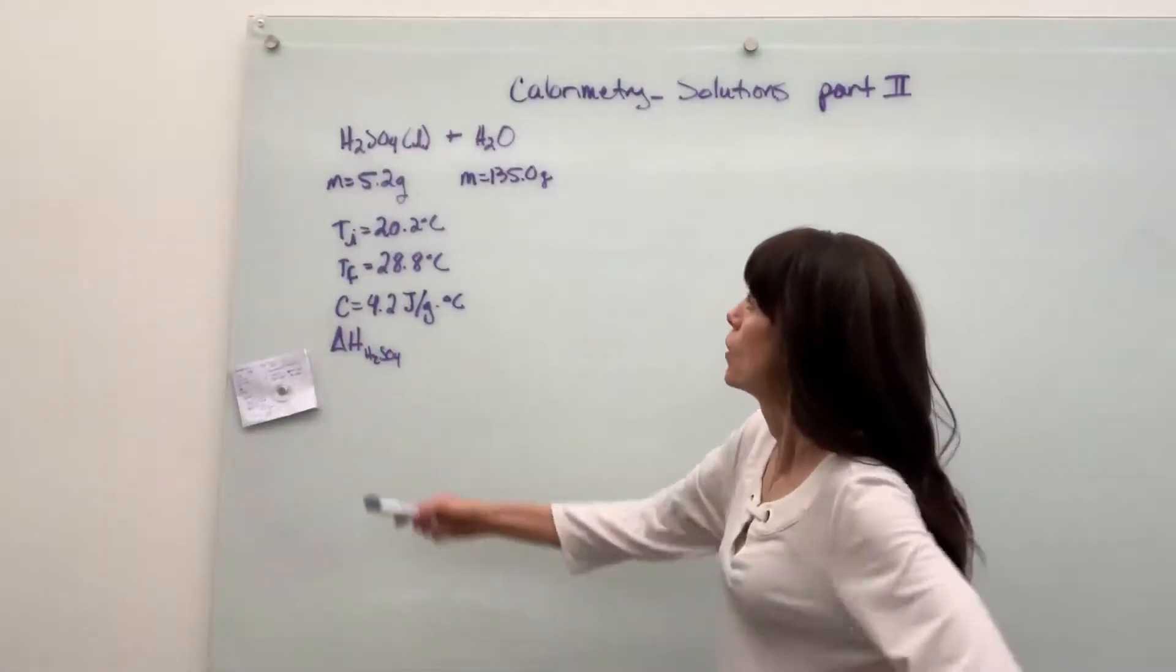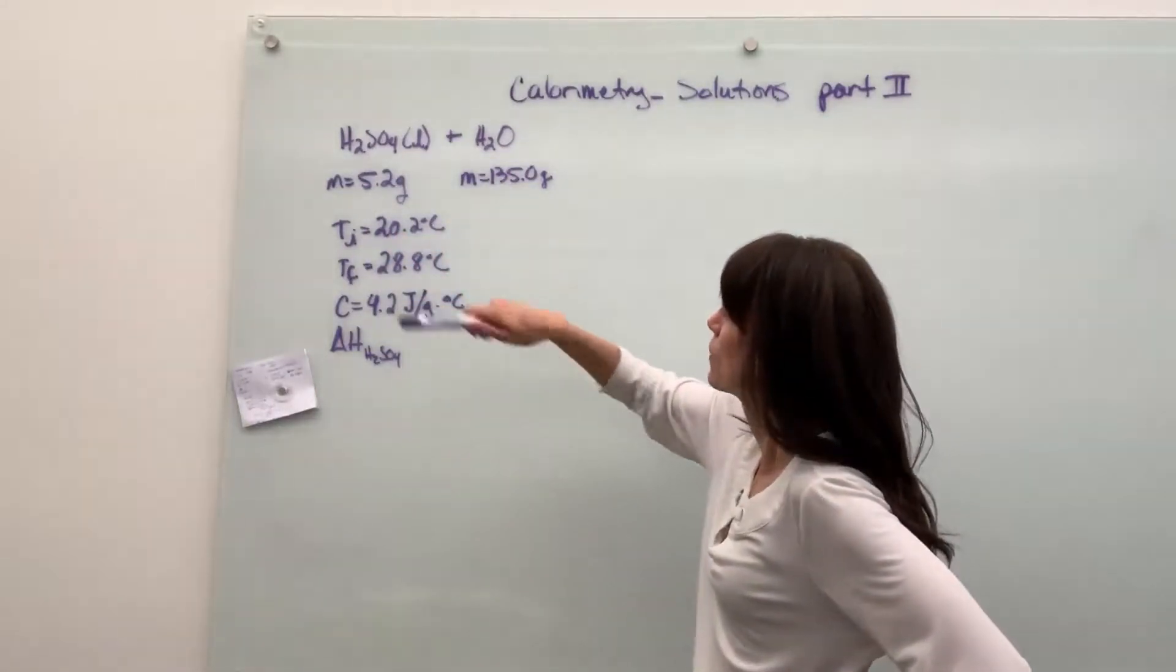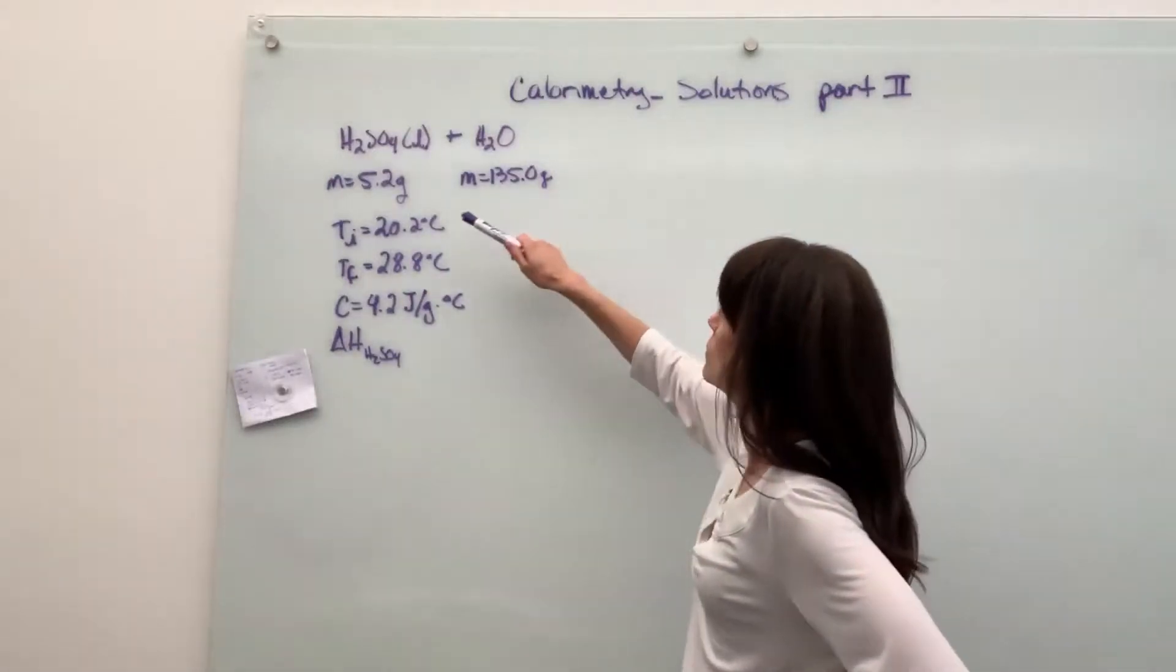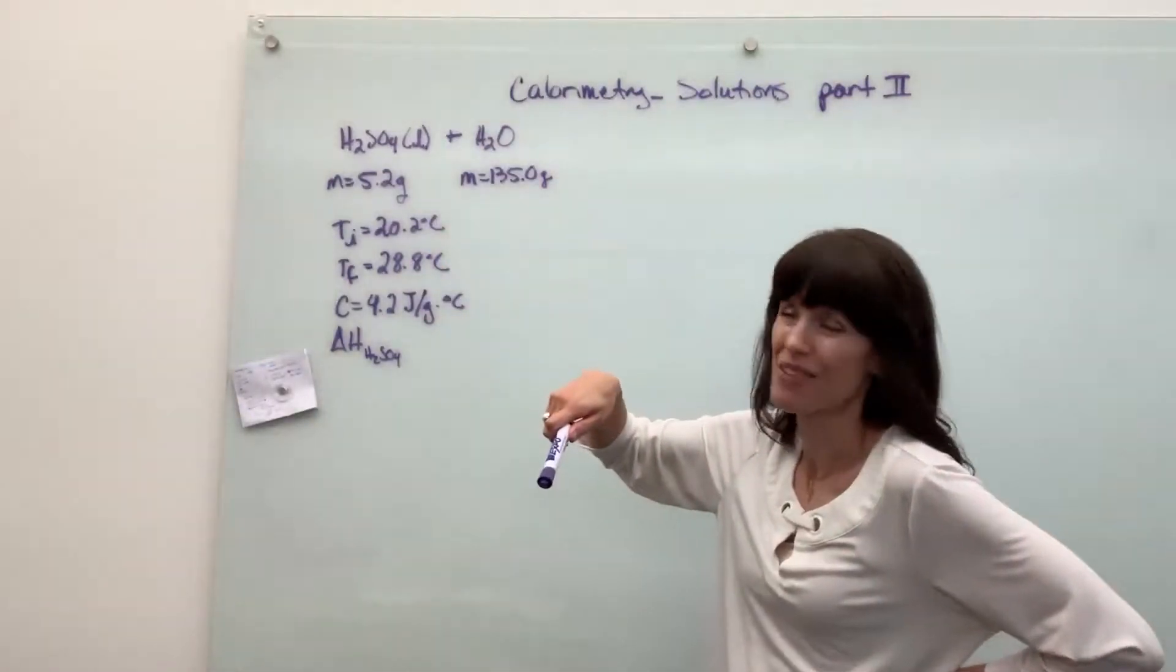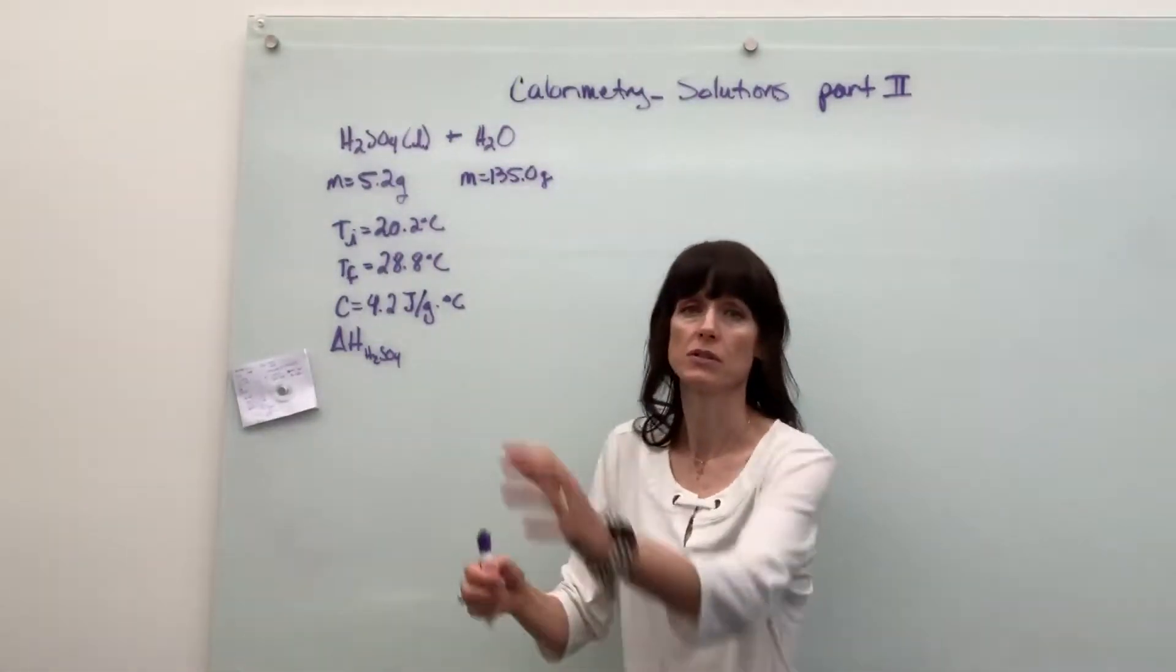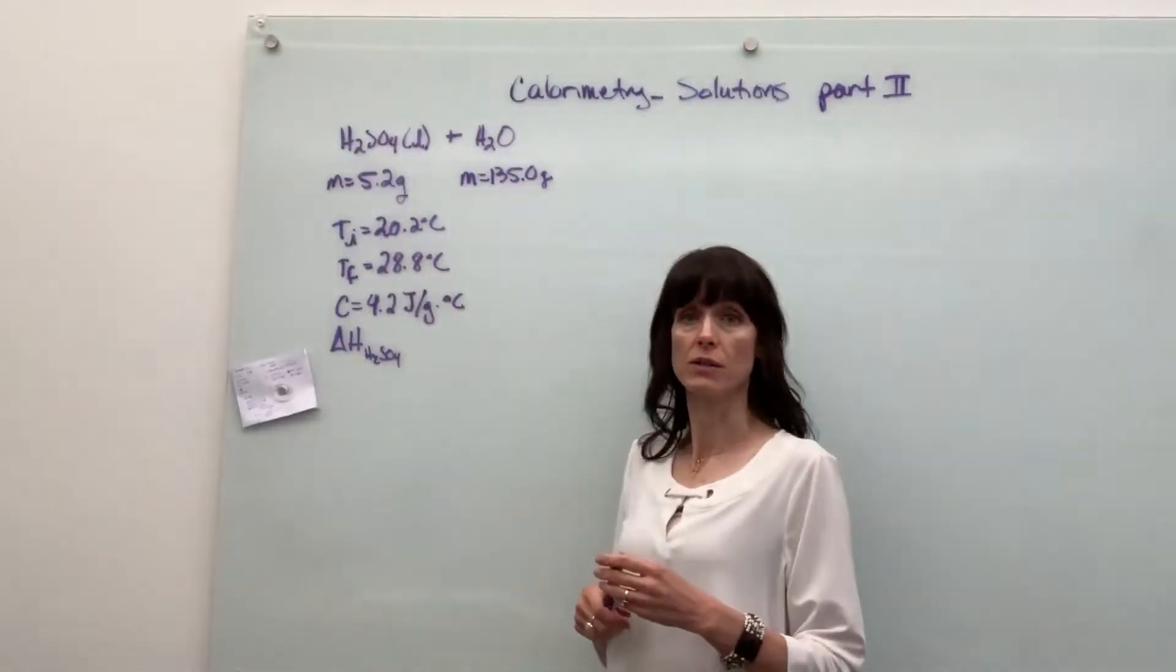Here's our question. We have sulfuric acid, liquid, and we have 5.2 grams of this. That's going to be pretty powerful stuff right there. And we're going to mix it with 135 grams of water. Now the initial temperature, these both would just be at room temperature, for each of these is 20.2 degrees C.